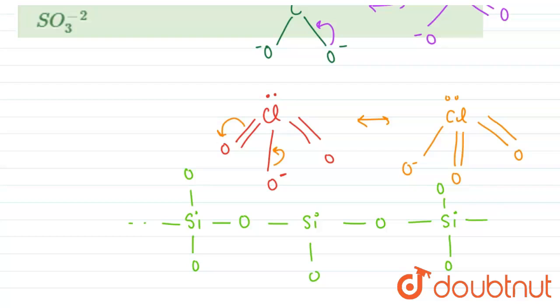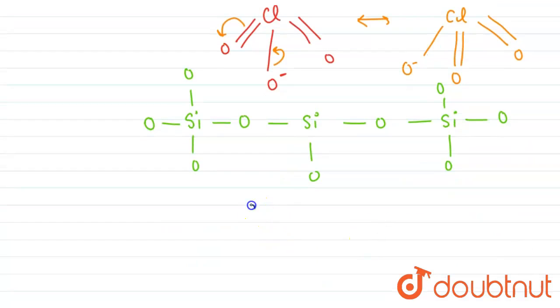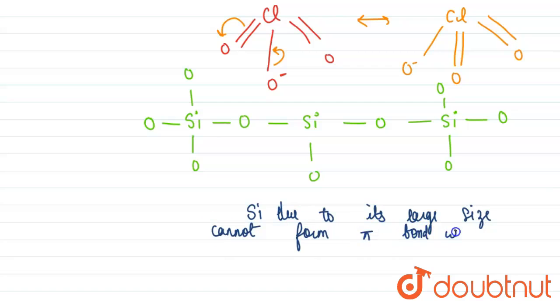Why? Because it cannot make a double bond with oxygen. Silicon, due to its large size, cannot form pi bonds with oxygen.